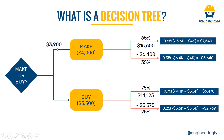The difference between the two make outcomes gives a path value of seven thousand five hundred and forty minus three thousand six hundred and forty, resulting in three thousand nine hundred dollars. For the buy case, the path value is three thousand seven hundred dollars. Since the bigger number is better, we select three thousand nine hundred dollars and go with the make option. I hope you liked the content — please consider subscribing to the YouTube channel and following us on Instagram and LinkedIn.